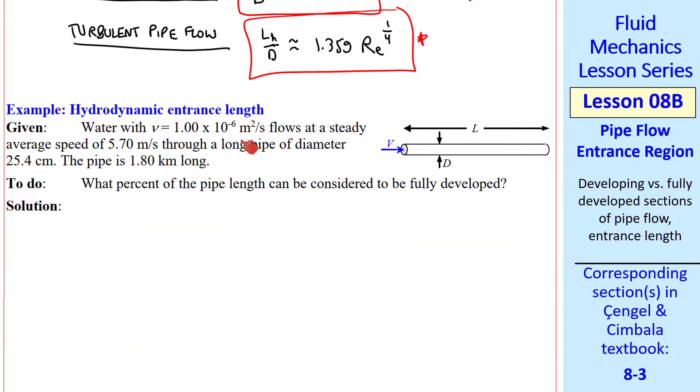Now let's do an example. Water flows at a steady average speed through a long pipe with a given diameter and length. We'll assume we have a nice, well-rounded inlet, so that we have an entrance region like we sketched previously, and the entrance length will be some portion of this pipe length. We're asked to find the percent of the pipe length that can be considered fully developed. That would be this portion downstream of the entrance length.